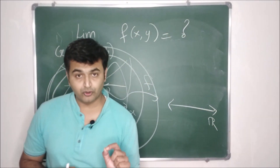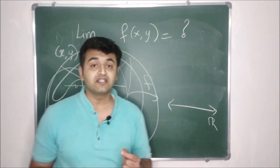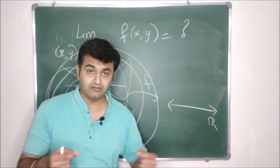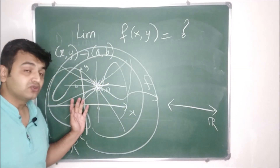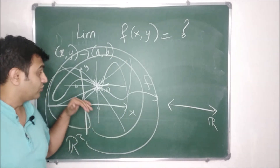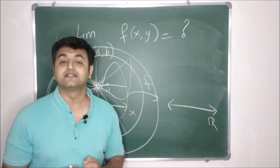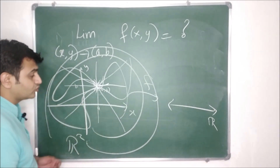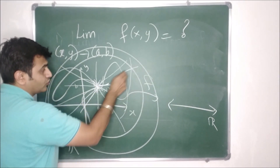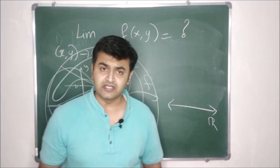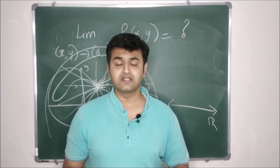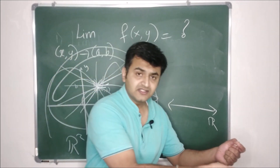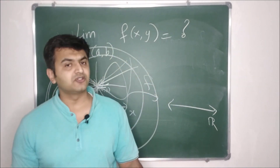As soon as you go from one-dimensional space to a higher-dimensional space, if you want to approach a point there are infinitely many ways to do so. In one-dimensional space there were only two paths — left and right — but from two dimensions onwards you can approach a point through infinitely many ways. So if you want to show the limit does not exist, you choose two paths and show that along those two paths the limits are different. Since the limit must be unique, getting two different values means the limit does not exist.